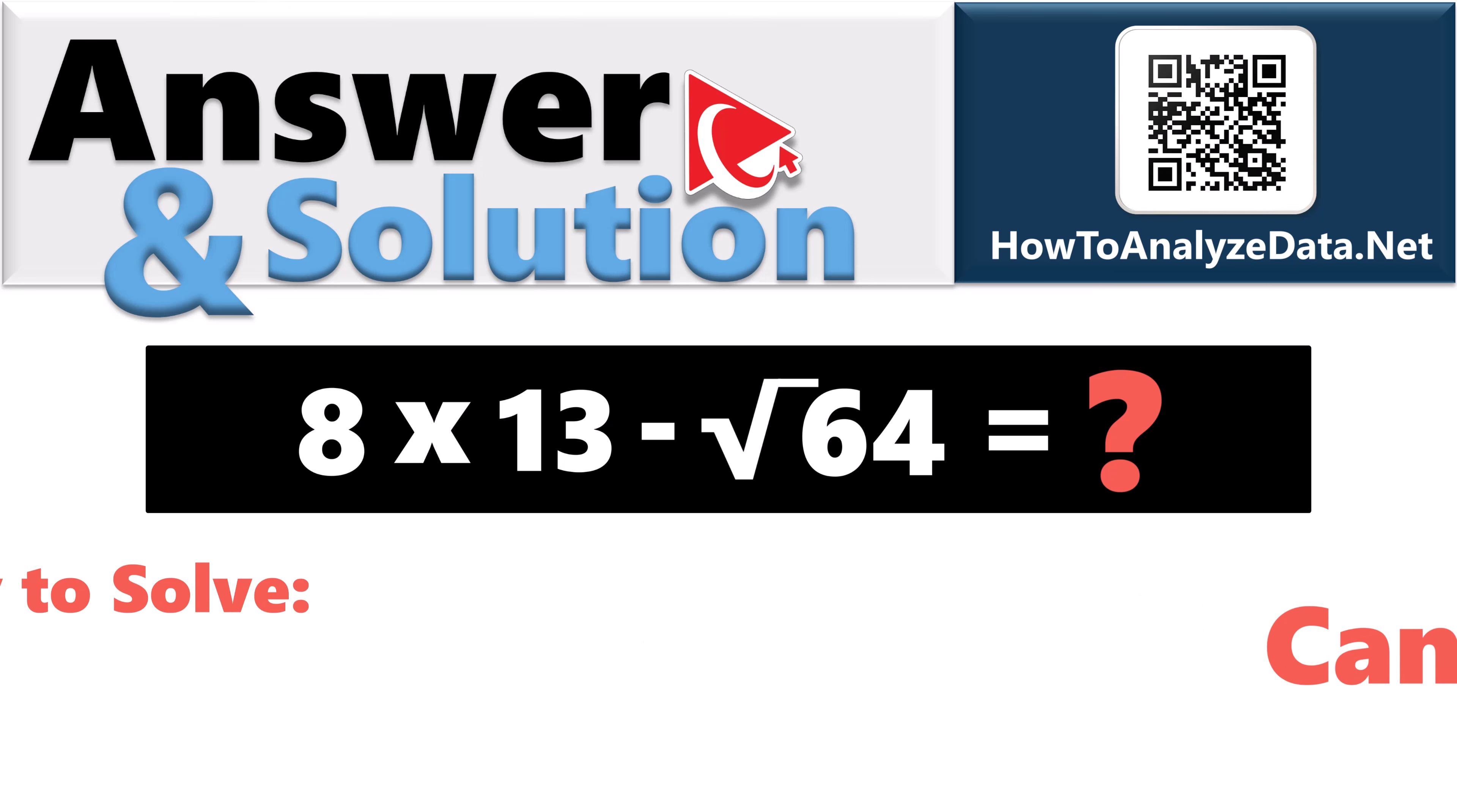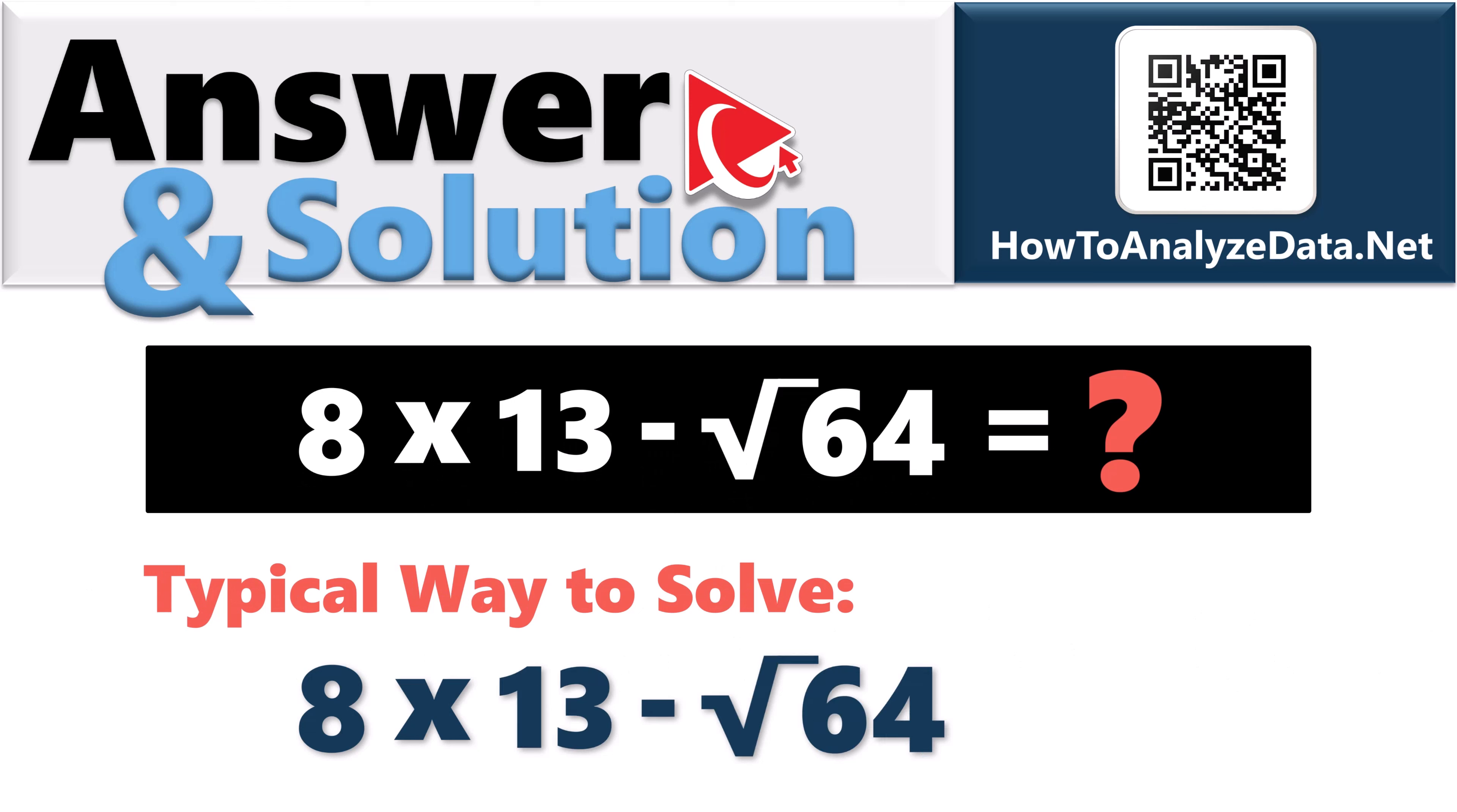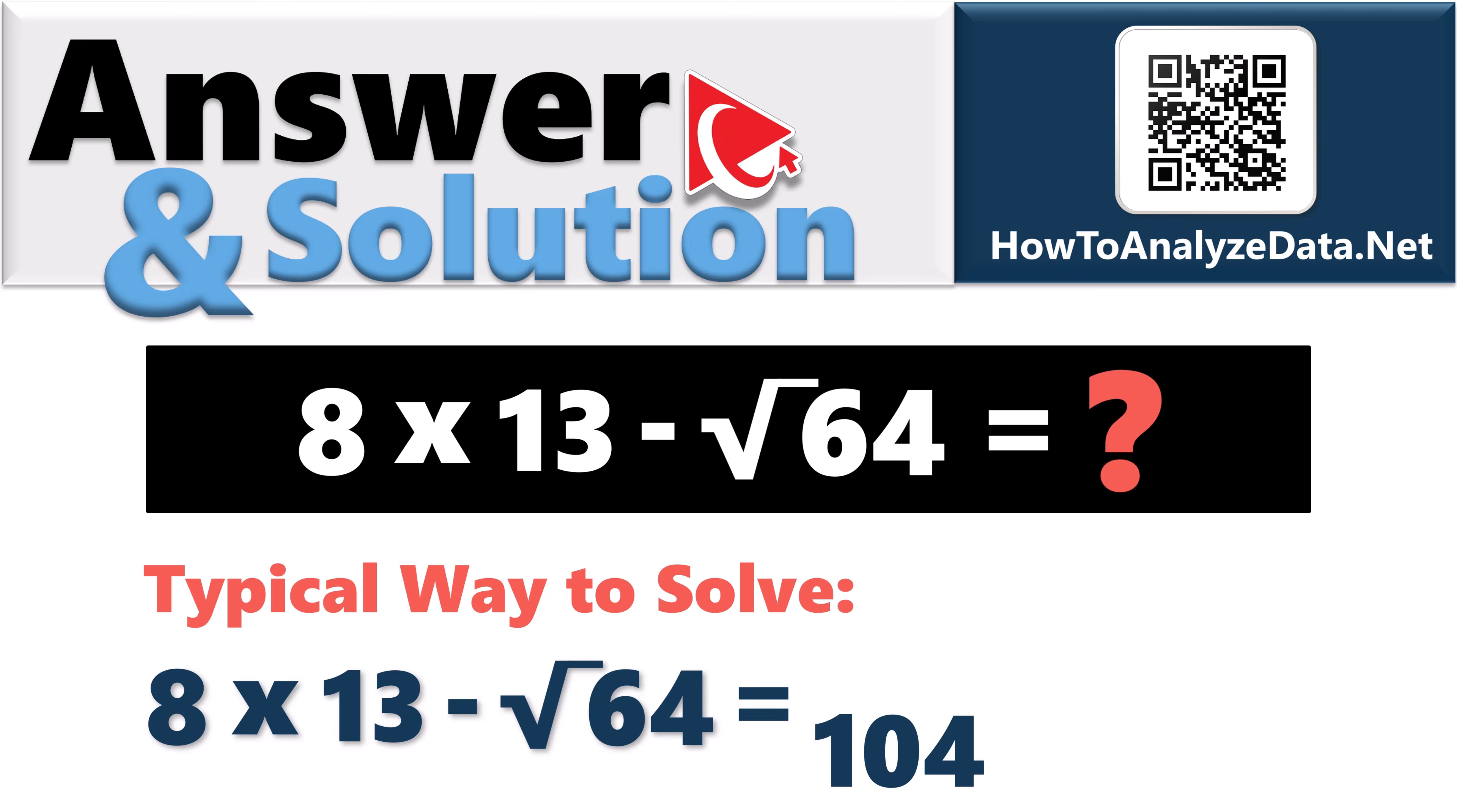Well, the typical way to solve it would be multiply 8 by 13, and then subtract the square root of 64, which would be 104 minus 8, and the end result of this would be 96.